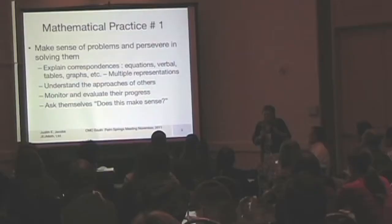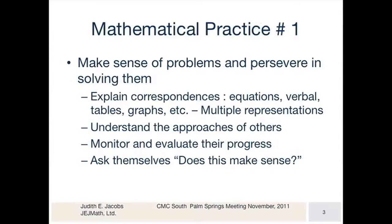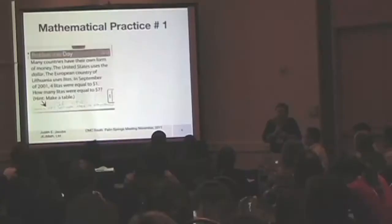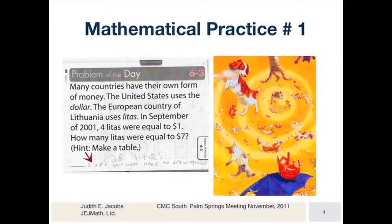The first one is about problem solving. The key thing here is how do we present problems, and does it make sense? I love this slide because the hint is 'make a table,' and the kid says he doesn't even have to do that. The other thing about making sense is 'raining cats and dogs' — does that make sense?